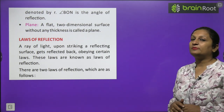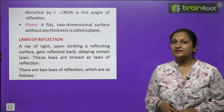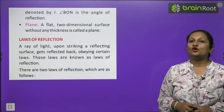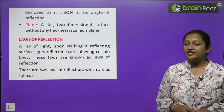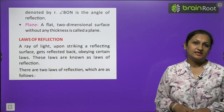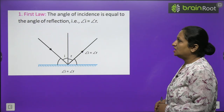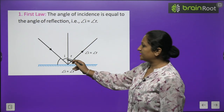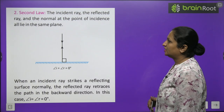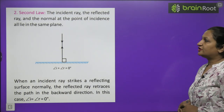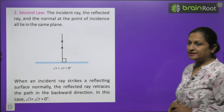Now, the laws of reflection. From the diagram, we get two laws. The first law states that the angle of incidence is always equal to the angle of reflection. The second law states that the incident ray, the reflected ray, and the normal all lie in the same plane. If the incident ray strikes the reflecting surface normally — that is, at 90 degrees — the reflected ray retraces its own path, and in this case angle i equals angle r equals 0 degrees.